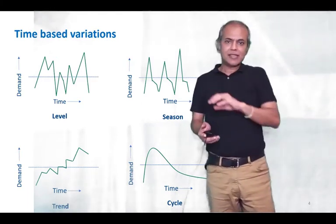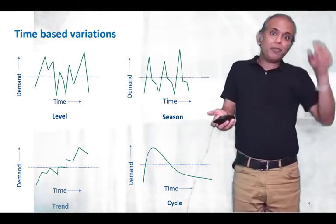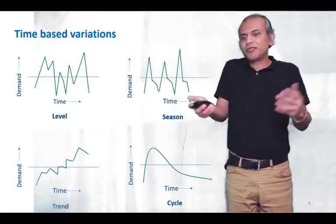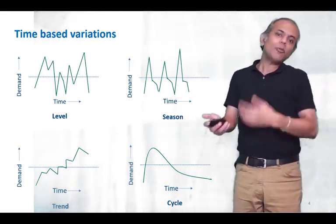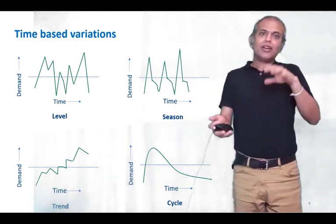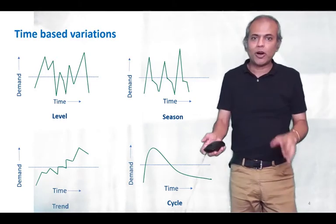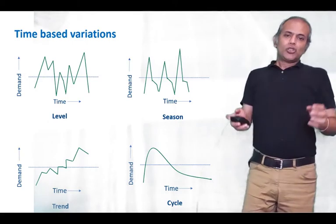And the last is cycles where because of economic conditions, the demand keeps going up and down. So if the economy is good for the next three or four years, the demand for all products will be good. But if the economic cycle slumps, suddenly demand for all products would slump down and we would have poor demand.